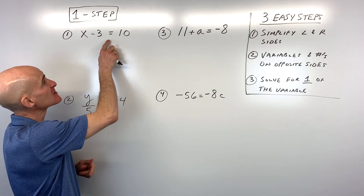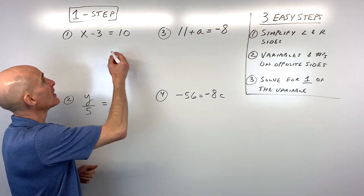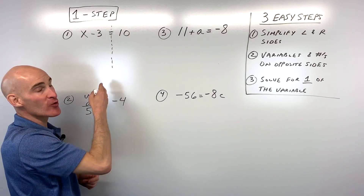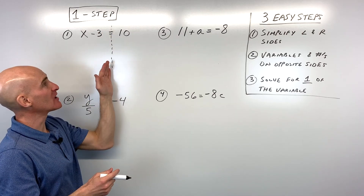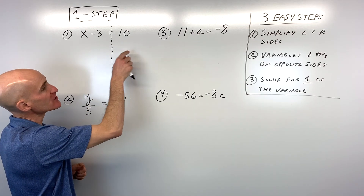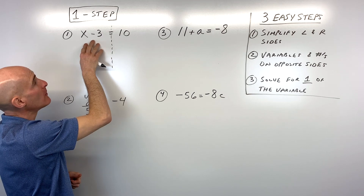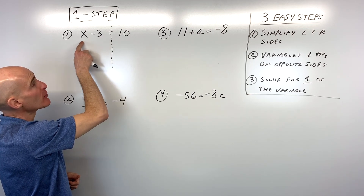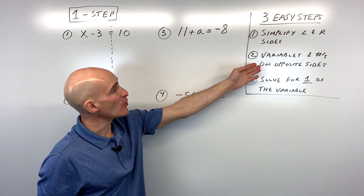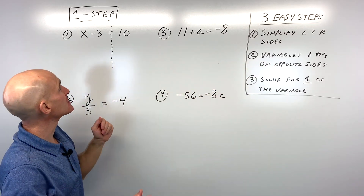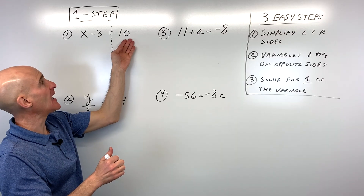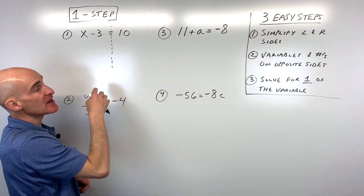The first one is x minus 3 equals 10. Some students' teachers reference the equal sign as the 'great wall of math' — you've got the left side and the right side of the equation. What you want to do is see first if you can simplify the left side at all. We can't combine a number and a variable together, and over here we just have a number, so we go to step two.